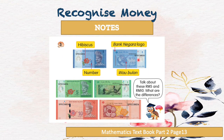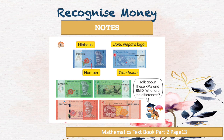Now we continue with notes. There are three notes here: one ringgit, five ringgit, and ten ringgit notes. Look at the first one — the one ringgit note. The color is blue. On the front surface of the one ringgit note, there are a hibiscus flower, the number one, and the picture of Yang di-Pertuan Agong, the first Agong of Malaysia. At the back of this note, we can see the Bank Negara logo.